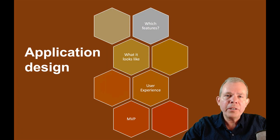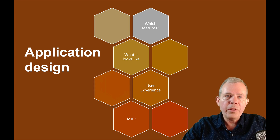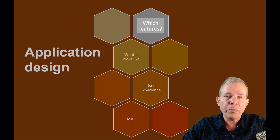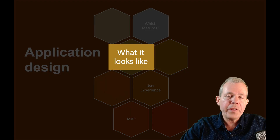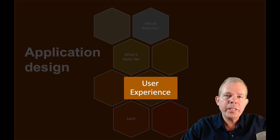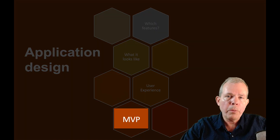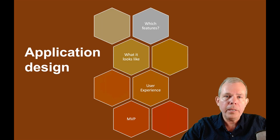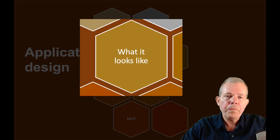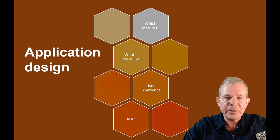In this section, we are talking about application design. There are four questions about how your app is going to look: which features are we going to choose, what the app looks like, what's the experience of the user, and what goes into creating a minimal viable product or MVP. We're here in section two, so please look at the other items in the playlist for this course.